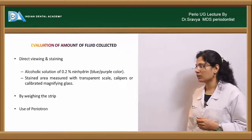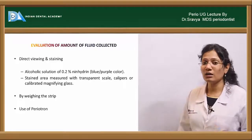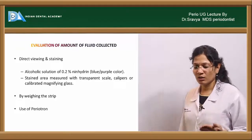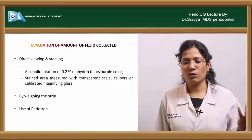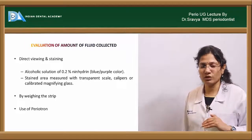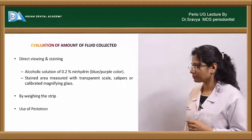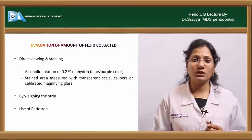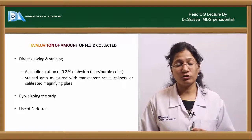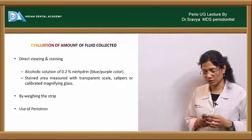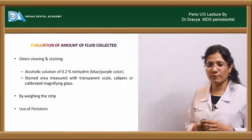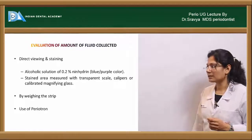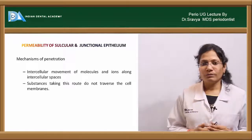Alternatively, you can weigh the strips before and after GCF collection and subtract to determine the amount. The latest devices used for quantitative assessment of GCF include the Periotron — available in models Periotron 6000 and Periotron 8000.